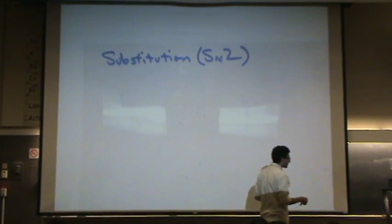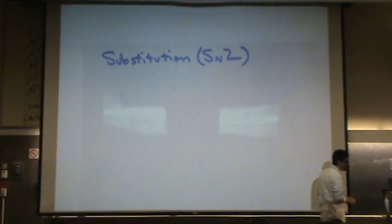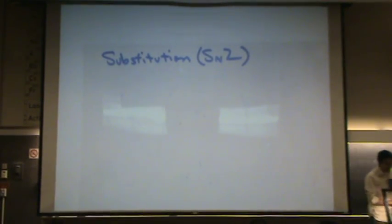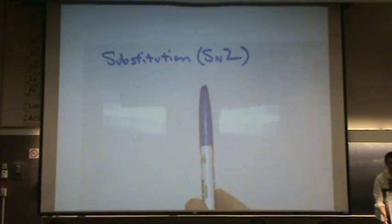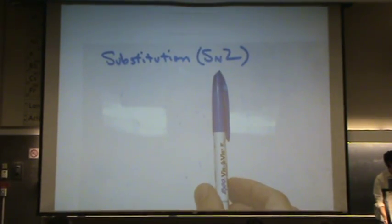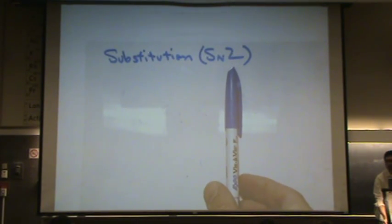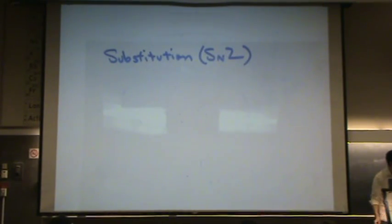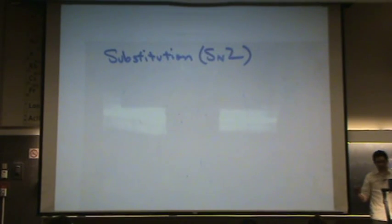SN2 is the technical name for our substitution reaction. The S stands for substitution, the N stands for nucleophile, which you'll see in a minute, and the 2 stands for the order of reaction — this is a second order reaction. There's also an SN1 reaction, for example, which is a first order reaction.